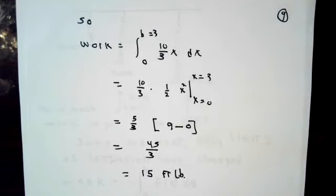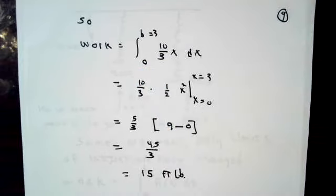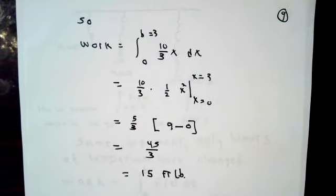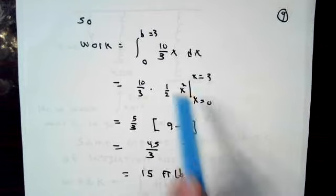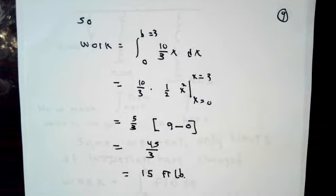So the amount of work that has to get done. We started at zero displacement from natural length. We ended up at 3 feet from natural length. Over that range of x values, I have to integrate the force. I have to integrate 10 thirds times x with respect to x.